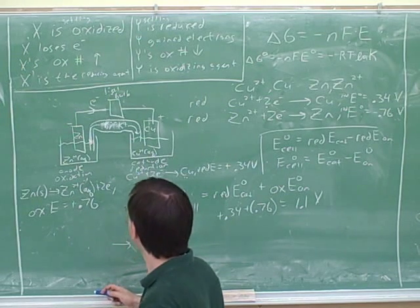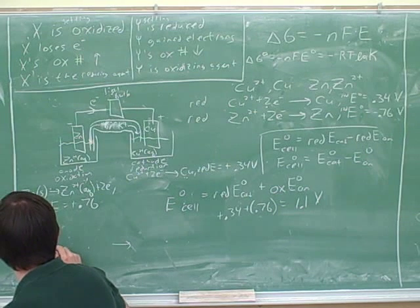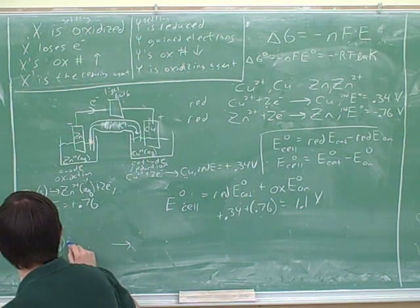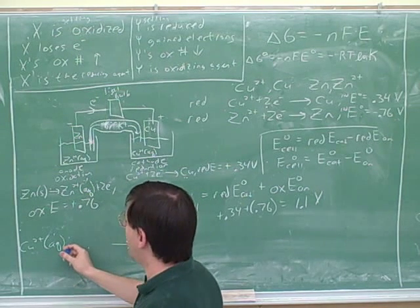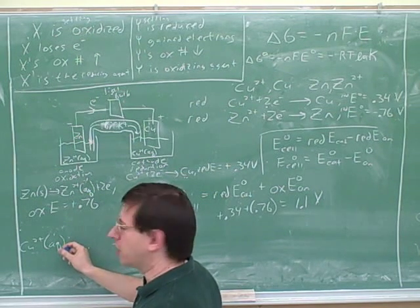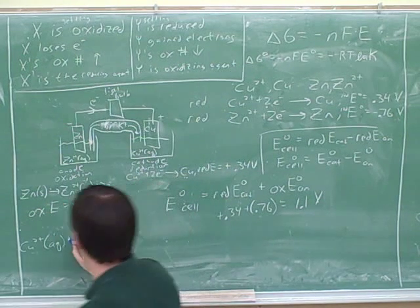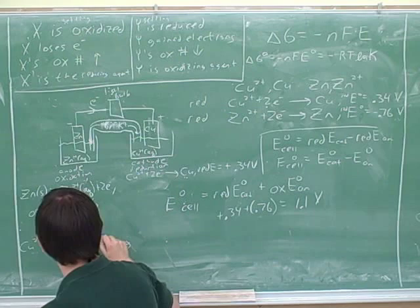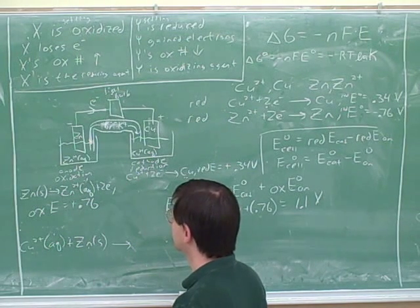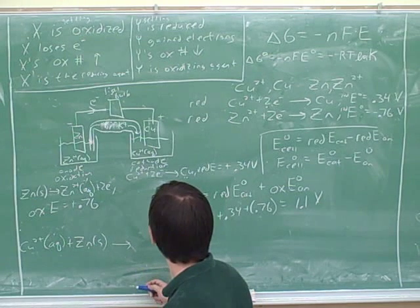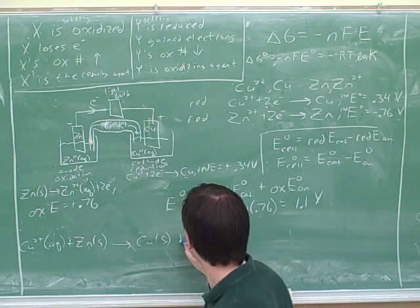The copper 2 plus plus two electrons yields copper solid. We still have the zinc. Right now I was only doing the starting materials. So the starting materials here would be copper 2 plus. And what's the starting material from this reaction? Zinc solid. Solid zinc, right. And what should be our products? Our products would be copper solid plus the zinc ion.